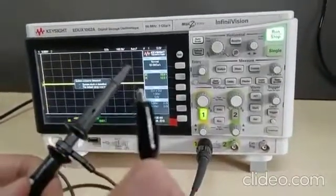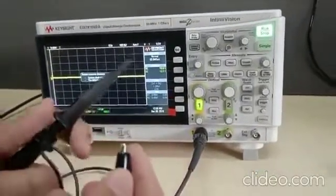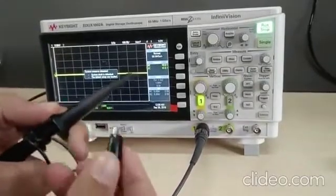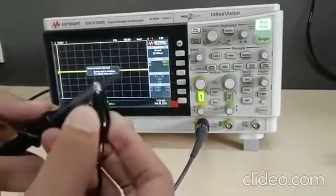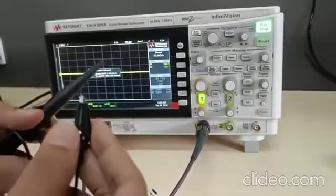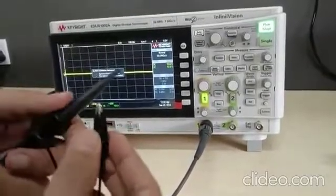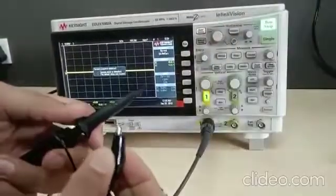These are DSO probes. This is positive terminal and this is negative terminal. But in our circuit, we cannot use these probes directly, so we need to extend them.